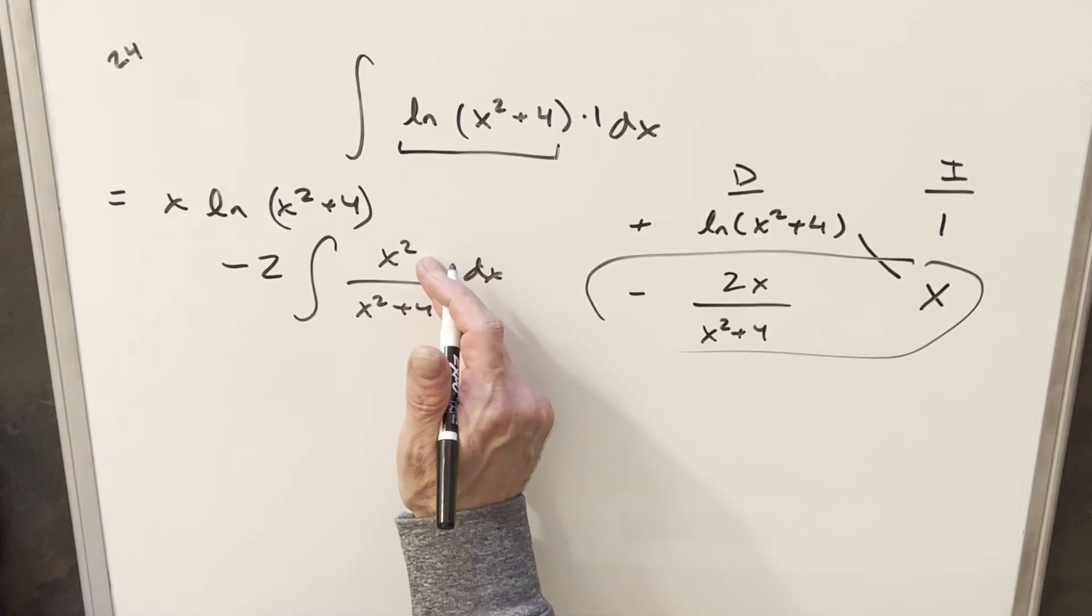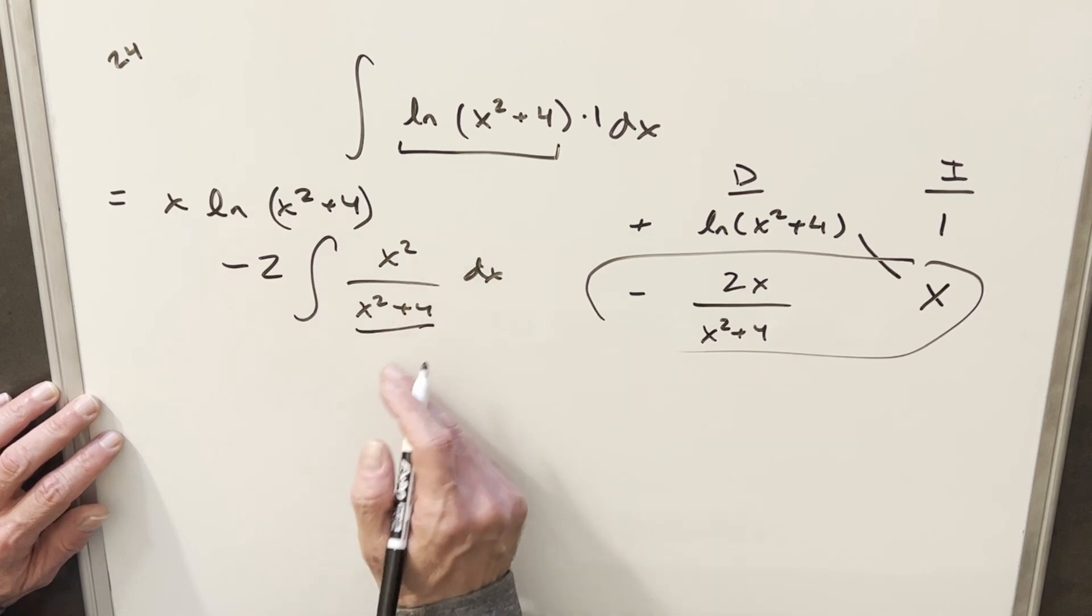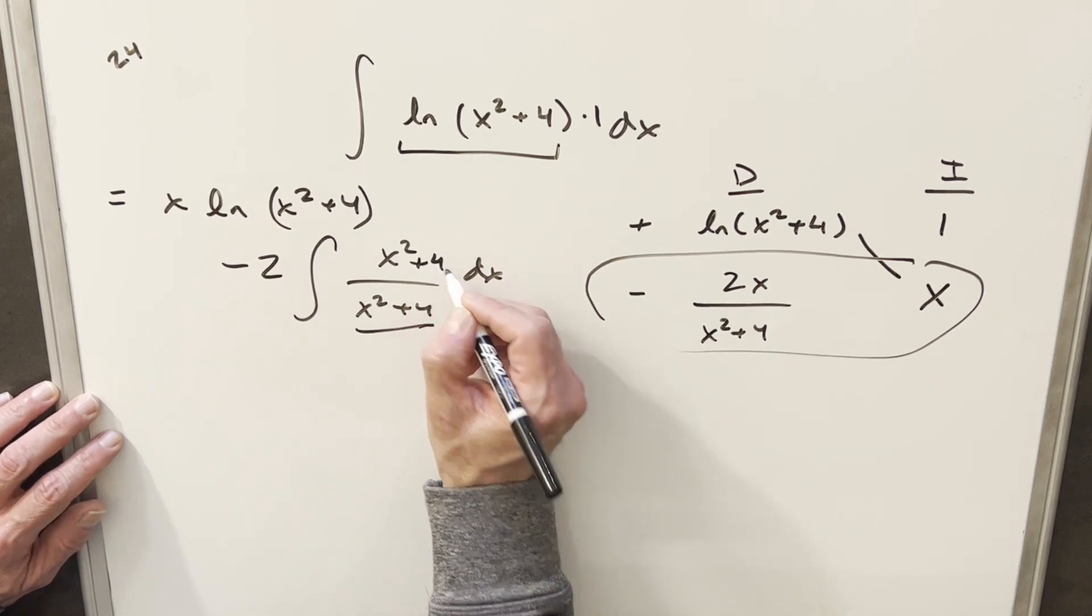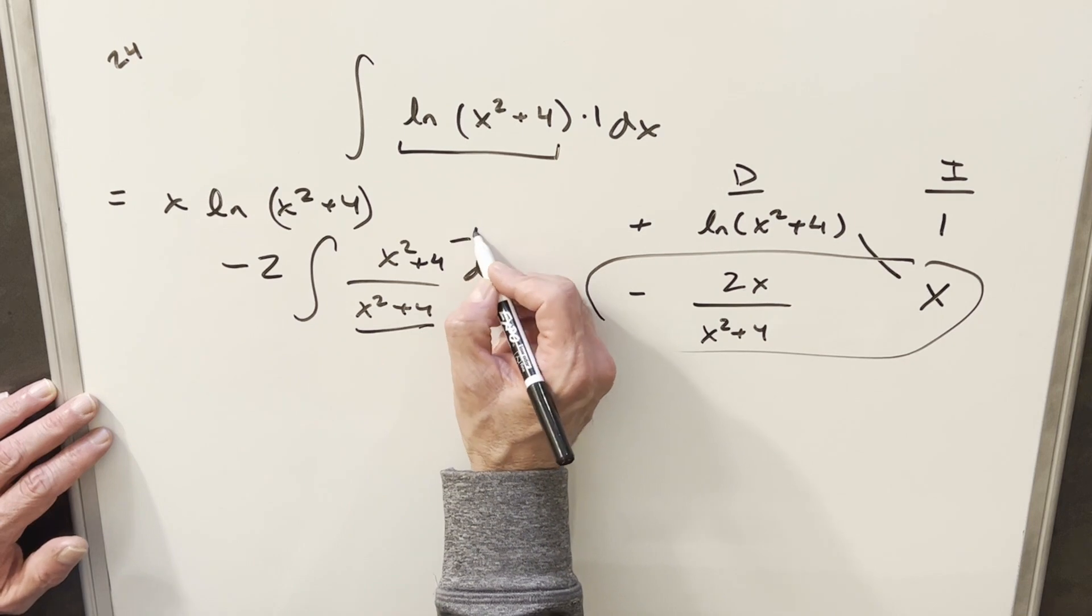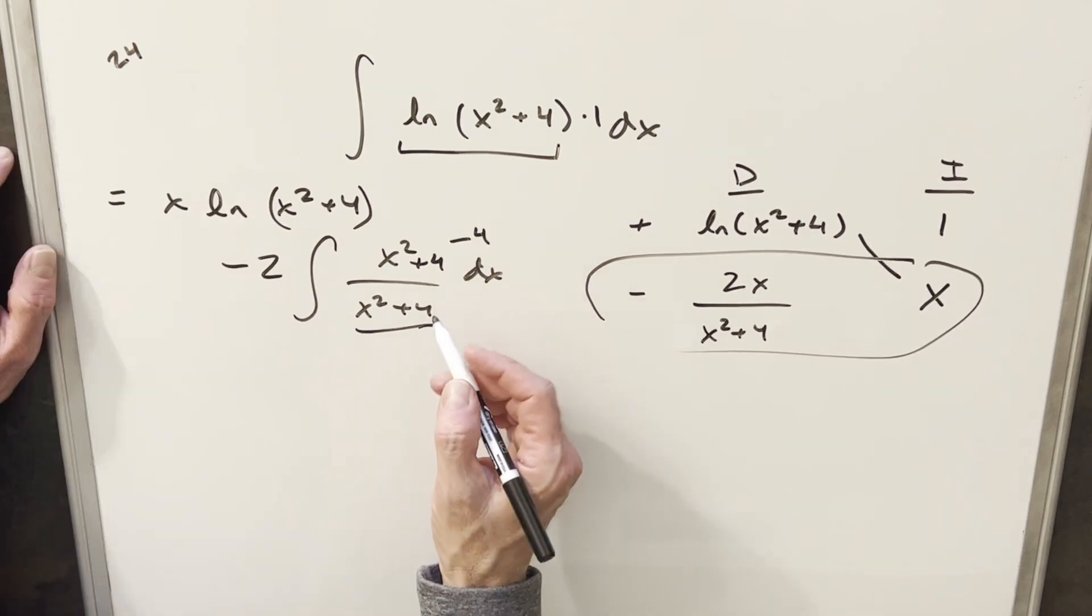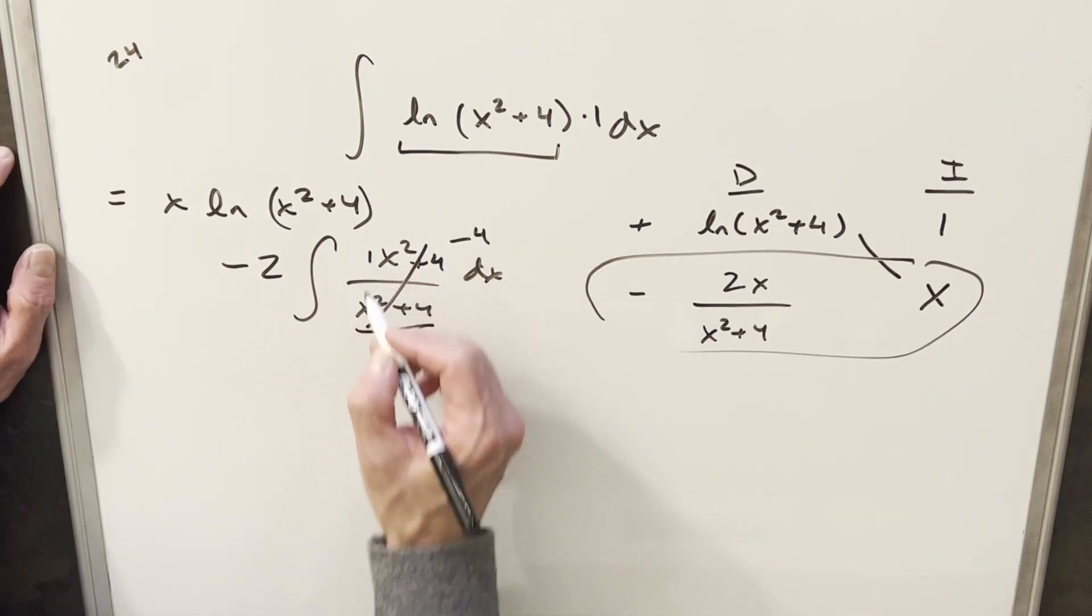Now I'm going to make this easy on myself. What I can do with the x squared, I can make it identical to the denominator just by adding 4 here, and this becomes 1. I don't want to change it, so I'll subtract 4. So when I rewrite this, this integral here is going to become 1.